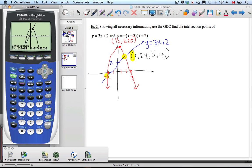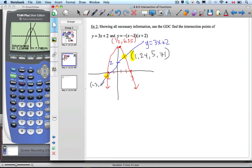And we do the other one. Same idea. We go to intersect, which is number 5. First curve, second curve. And I'm going to guess that looks to me to be about the x-value is -3. And indeed, it's -3.24, -7.71.